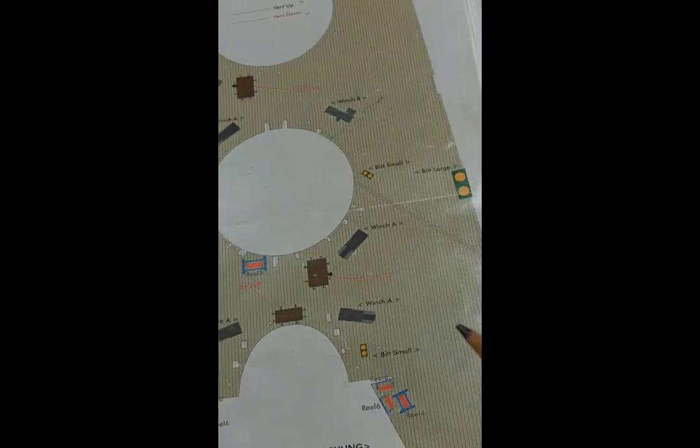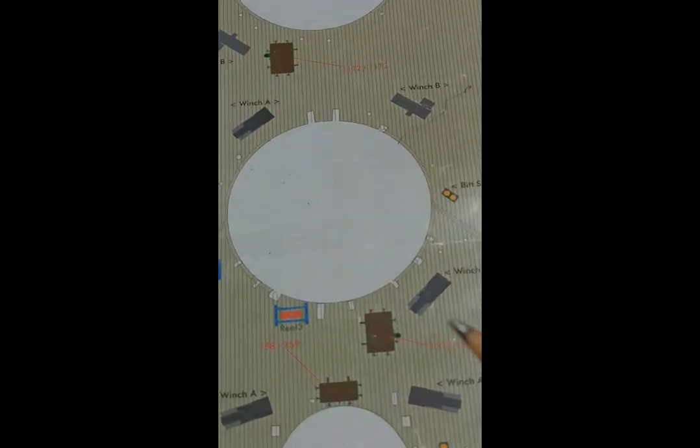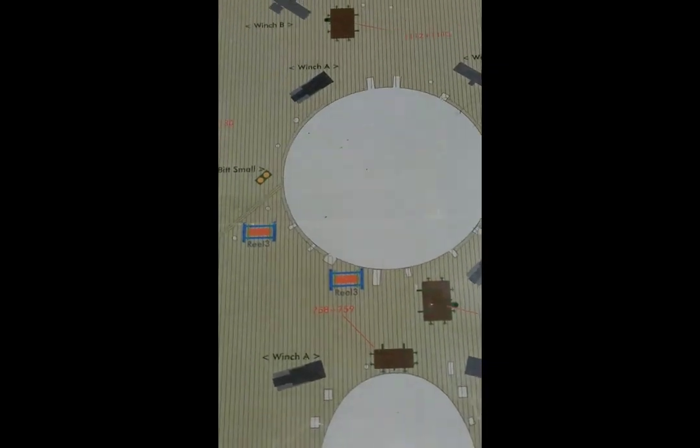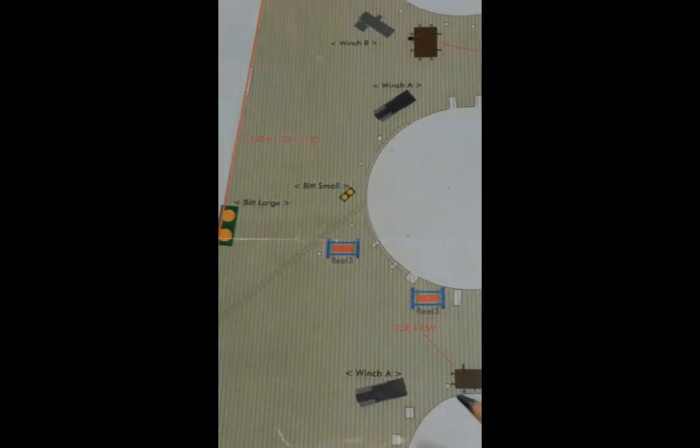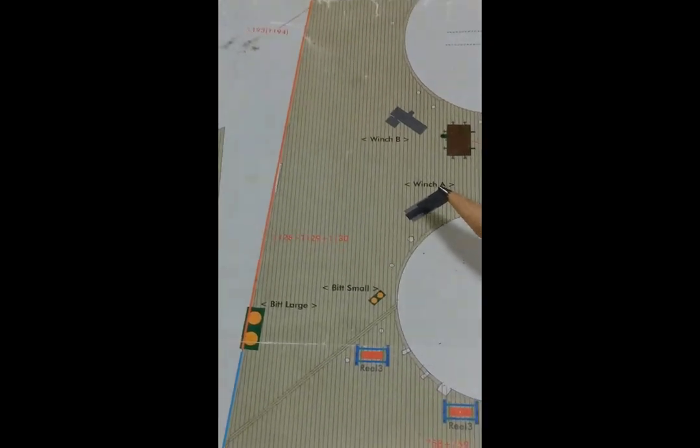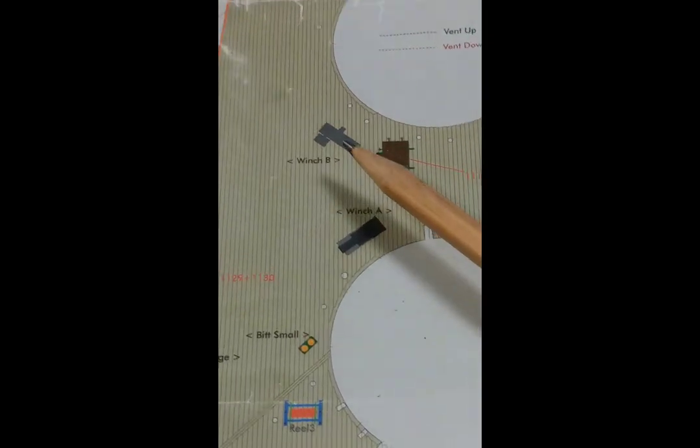That's the three reels in place. The next session I'll be doing the windshields, Type A and Type B. There's three Type A's and one Type B on the forecastle.